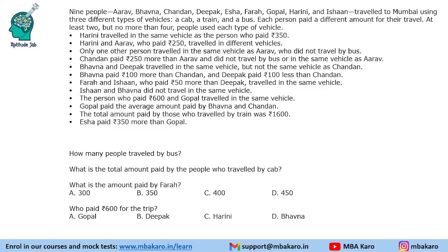Hello everyone, welcome to Aptitude Jab. This set says that there are 9 people who travelled to Mumbai using 3 different types of vehicles, and each person paid a different amount for their travel. It is given that at least 2 but not more than 4 people used each type of vehicle.